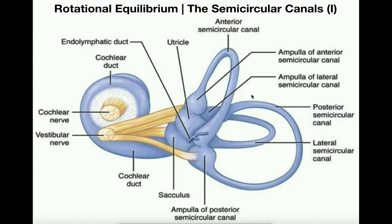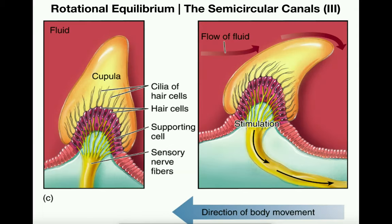If we look at each of these three canals, notice that they each have this engorgement called the ampulla. There's an ampulla of the anterior semicircular canal — there's an ampulla of all three of them. Contained within the ampulla we have a structure very similar to the otolithic organs, but instead it's called a cupula. A cupula is a fancy word for a dome, and this yellow structure right here is the cupula.